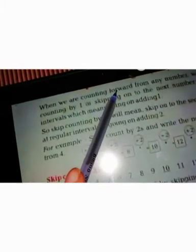When we are counting forward from any number, we are counting by 1 or skipping on to the next number at regular intervals, which means going on adding 1. Skip means jump to the next number at regular intervals, which means going on adding.